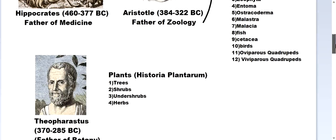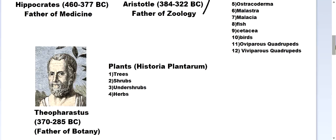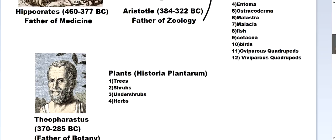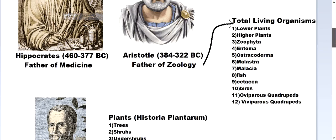Then comes Theophrastus, the father of Botany, who classified plants in his book Historia Plantarum into trees, shrubs, undershrubs, and herbs. That covered the before-Christ attempts at classification.